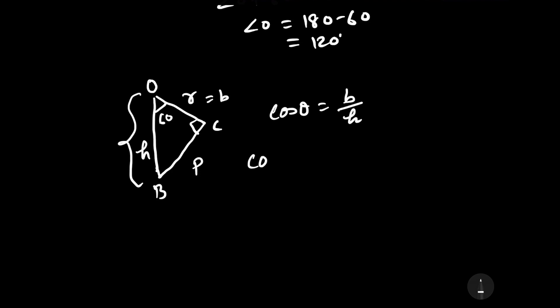If you apply cos 60 degrees, then this will equal OC upon OB. We have to find the length of OB. The length of OC is R. Then OB can be written as R upon cos 60. The value of cos 60 is 1 by 2. Therefore, if you write 1 by 2, then this will equal 2R.